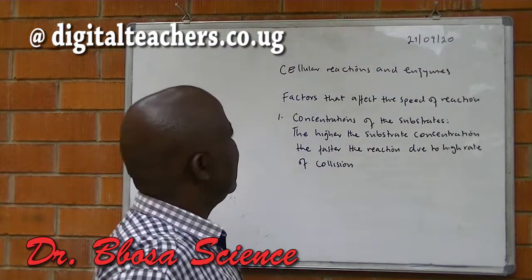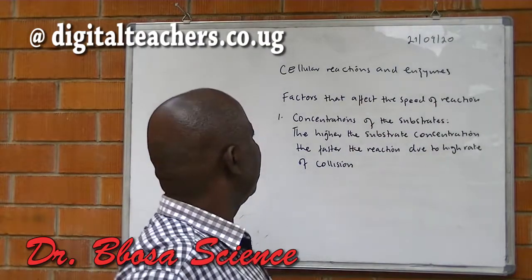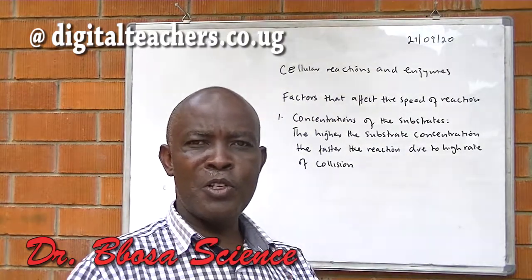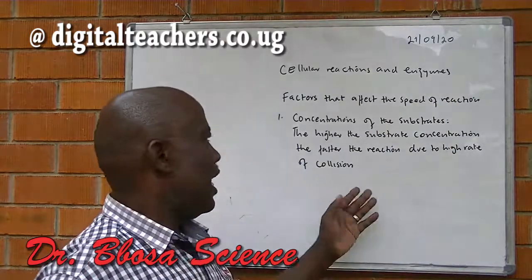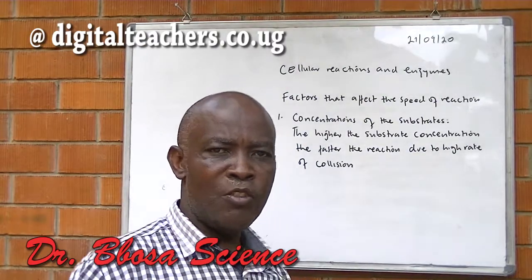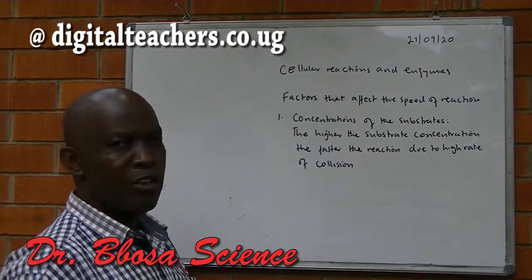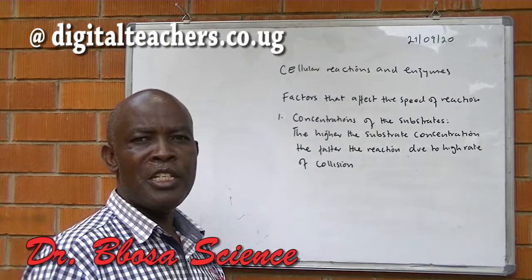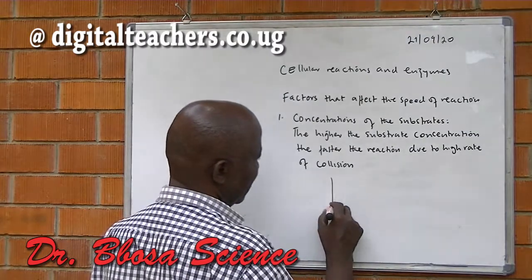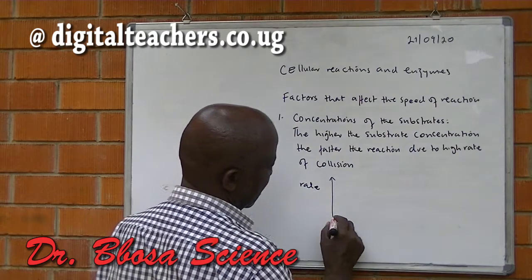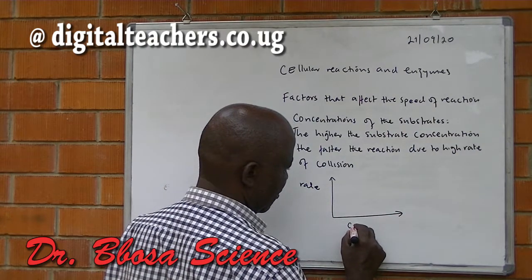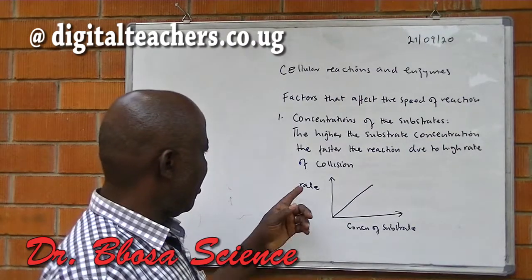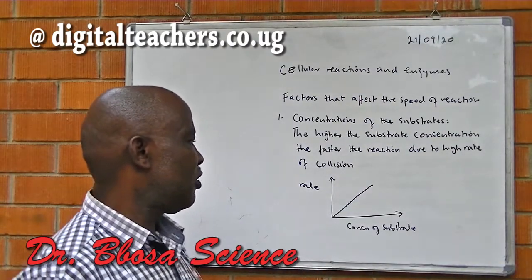Factors that affect the speed of a reaction. One, concentration of the substrate. Substrates are molecules which react together to form the product. The higher the concentration of the substrate, the faster the rate of the reaction. This is due to high rate of collision. When the substrates are many, they collide more frequently to produce the product. The rate increases with concentration of the substrates.